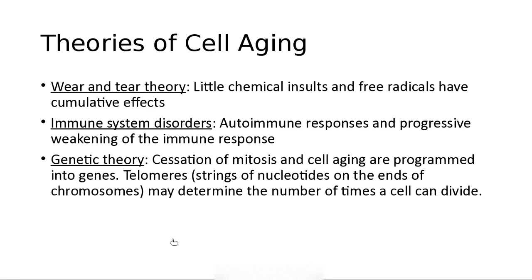Theories of aging: recent researchers suggest no one lives past 115. The first theory is the wear and tear theory — little chemical insults and free radicals add up and you just finally wear out and die. Next, immune system disorders — the older you get, the more autoimmune disorders develop. The genetic telomere theory, for which a Nobel Prize was won, proposes that telomeres — DNA that doesn't code for anything on the end of each double helix — get shorter every time a cell divides.